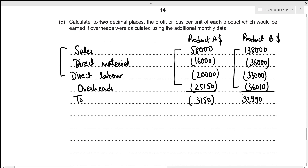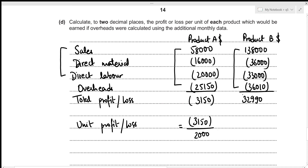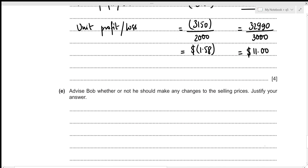Profit/loss per unit: Product A = 3,150 ÷ 2,000 = $1.58 loss per unit (shown in brackets). Product B = 32,990 ÷ 3,000 = $11.00 profit per unit. This concludes Part 4.